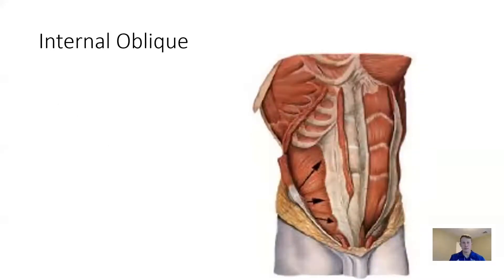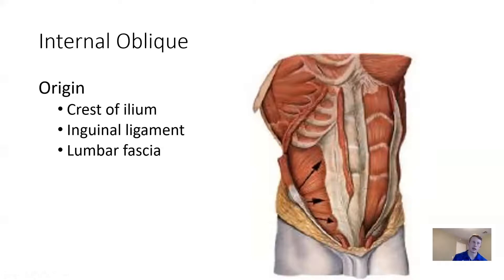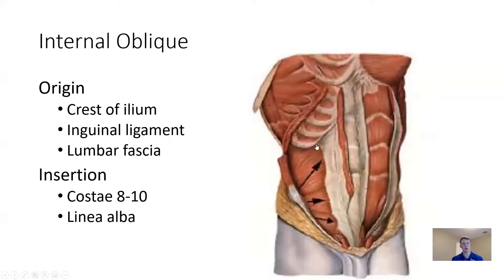Moving a little bit deeper underneath rectus abdominis and external oblique, we have internal oblique. Internal oblique is a same-side rotator. It has an origin on the iliac crest, the inguinal ligament, and the lumbar fascia — posterior on that pelvis — and also an insertion on costal 8 through 10 and the linea alba.